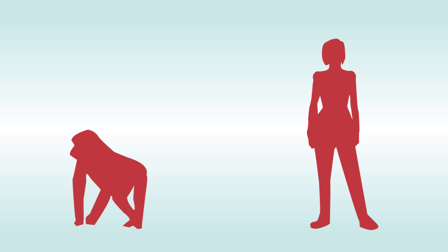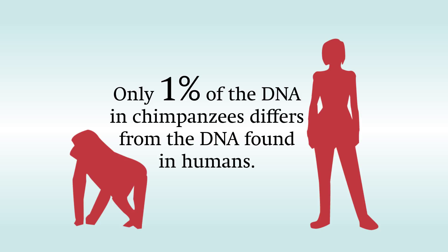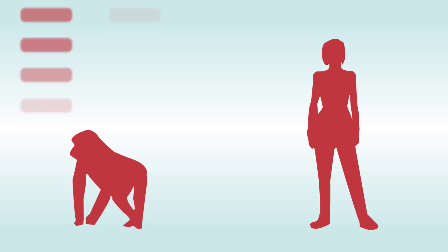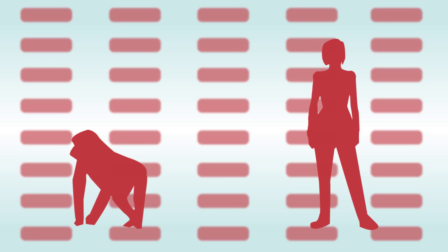For example, scientists have found that only 1% of the DNA in chimpanzees differs from the DNA found in humans. That is, for every 100 bases compared between us and chimps, there is only one difference.